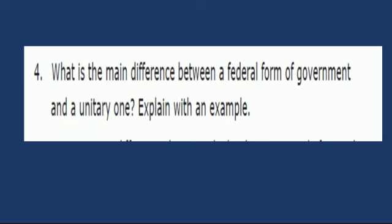Question 4: What is the main difference between a federal form of government and a unitary one? Explain with an example. If in a country there exist two or more levels of government, that is called a federal form of government. If a single central government controls the entire country with subordinate local governments, that is called a unitary form of government. America is an example of federal; China is an example of unitary — China is a communist state where the central government enjoys maximum power compared to state or regional government.